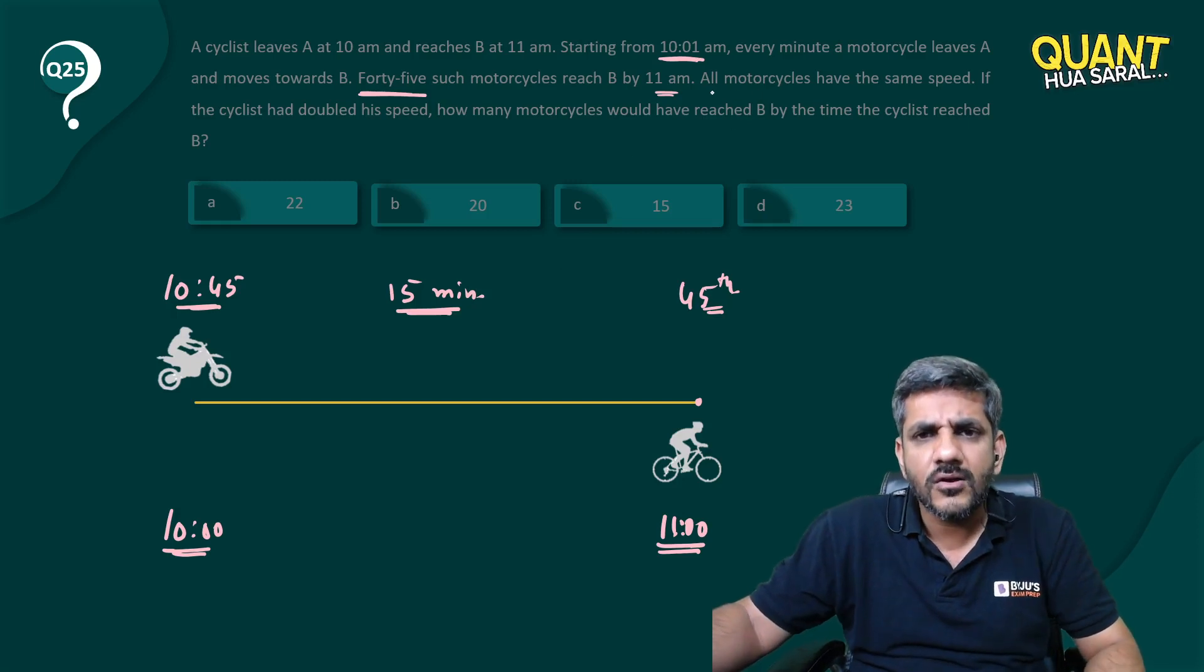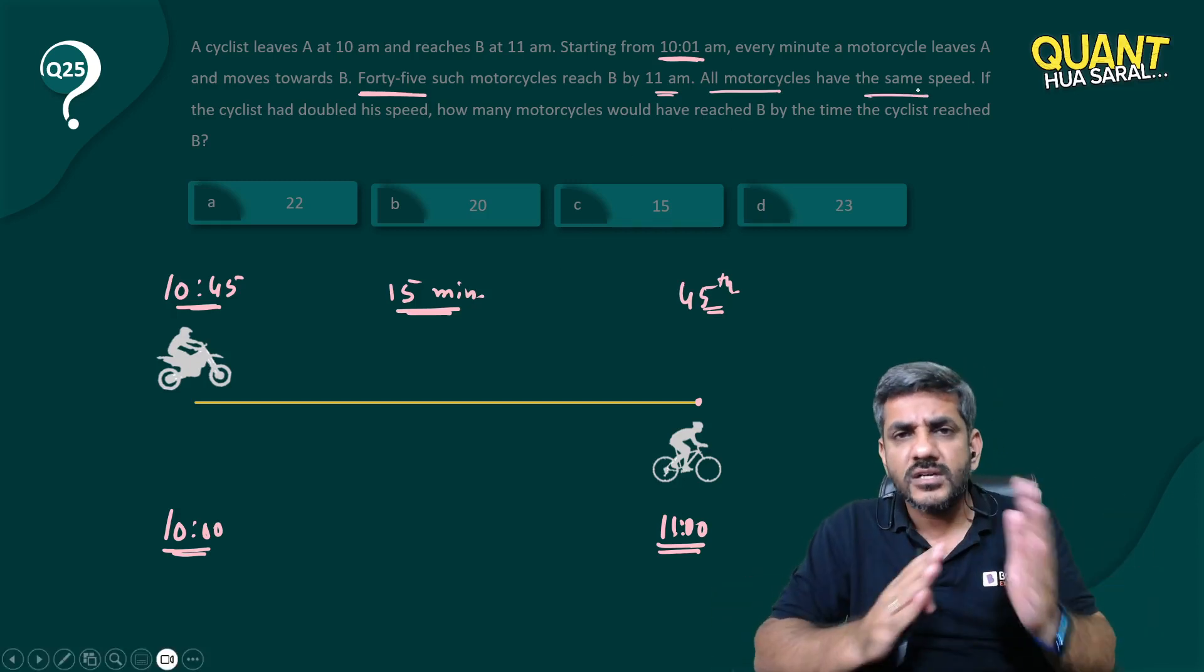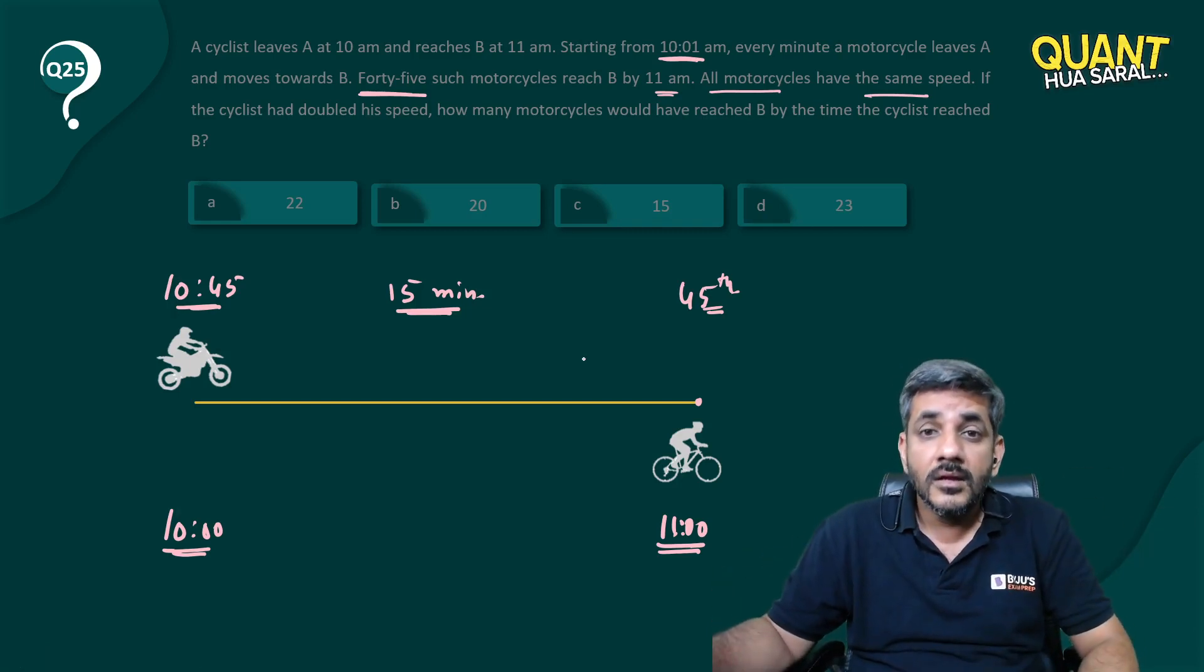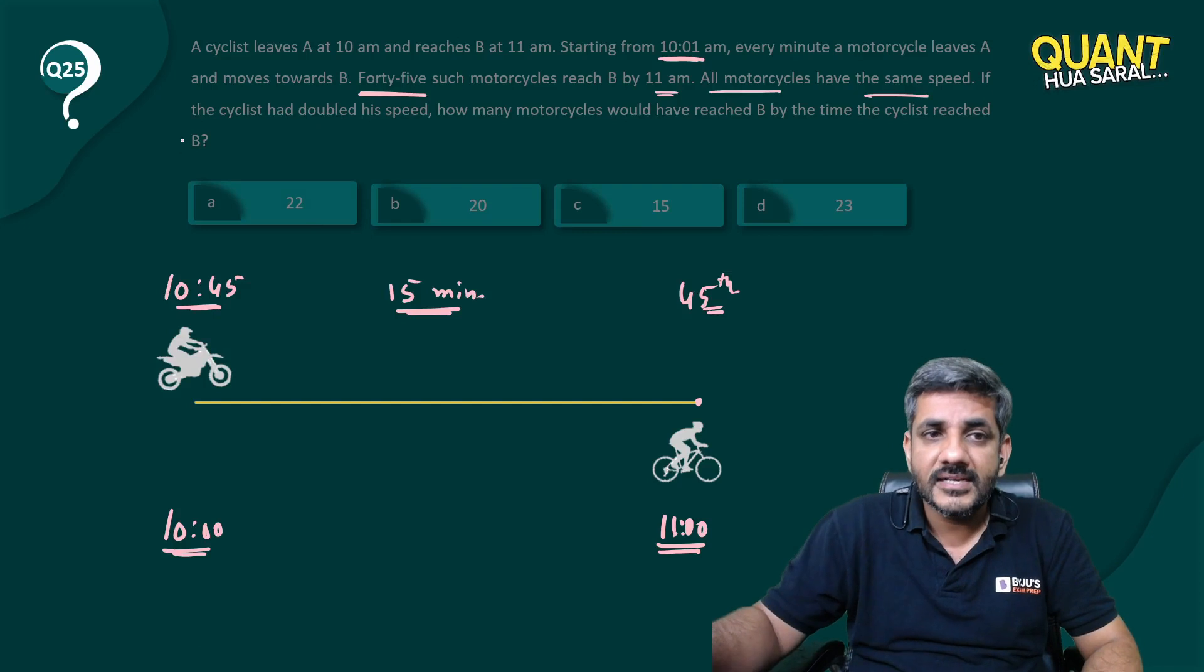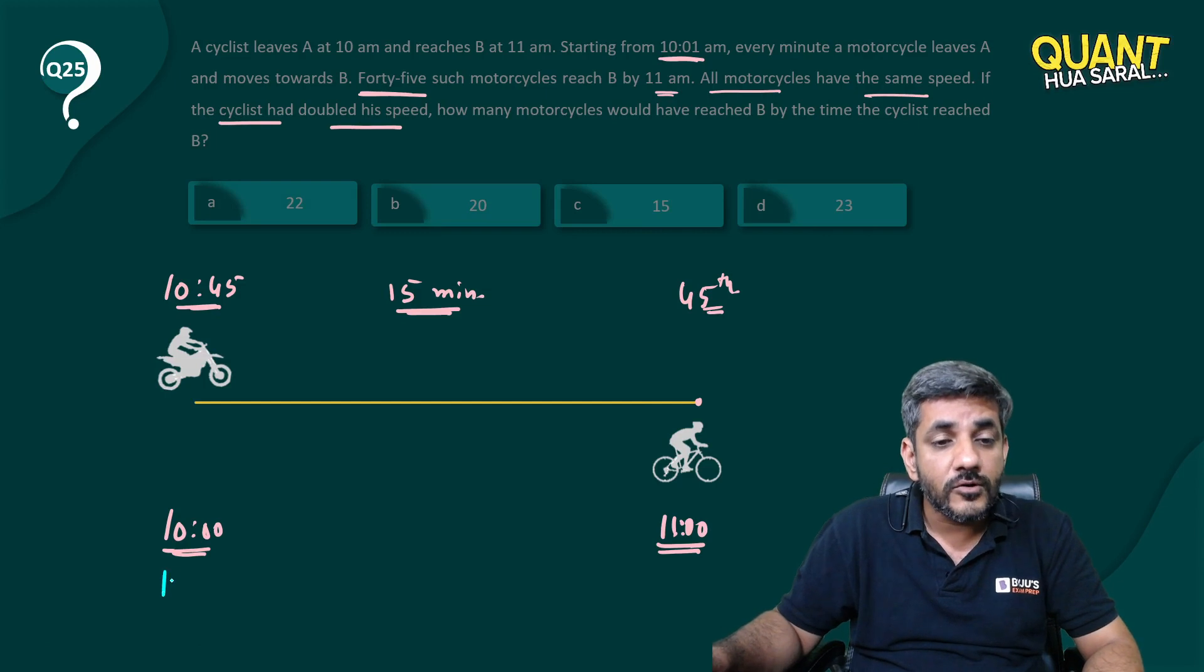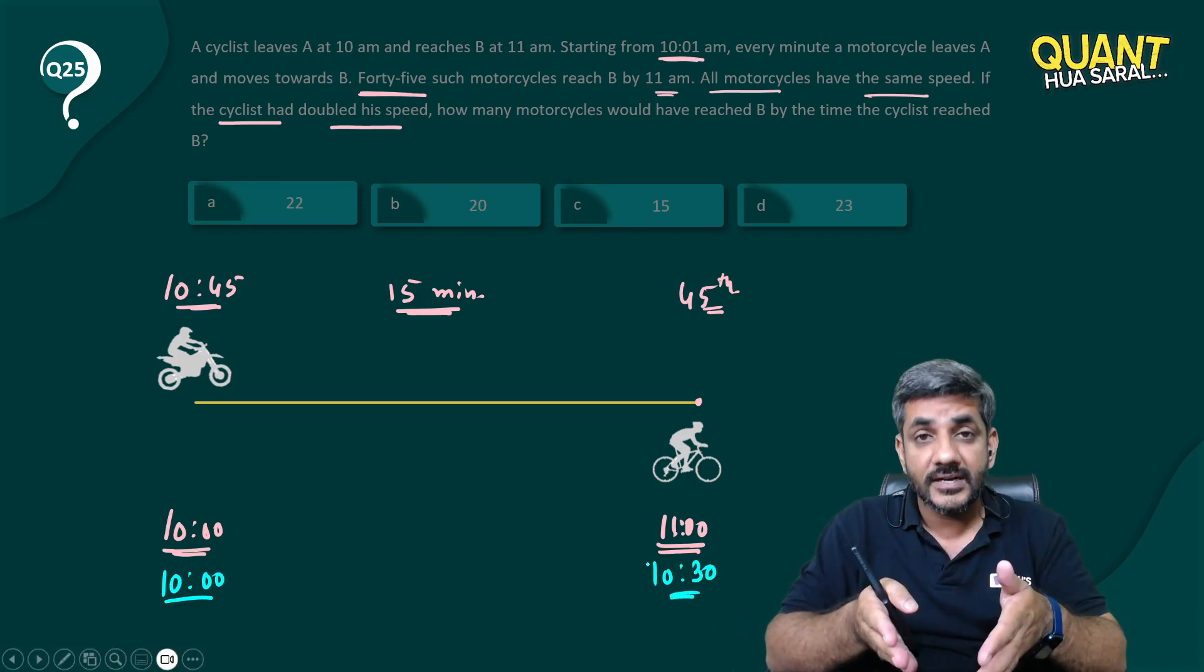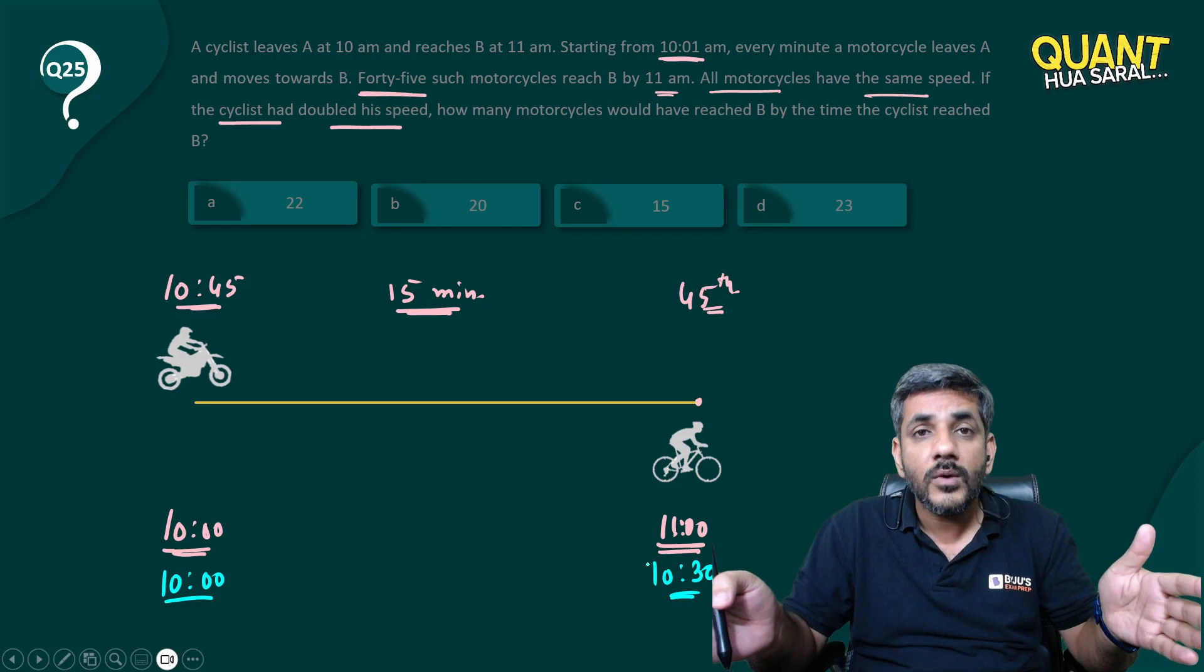And it's clearly written that all motorcycles have the same speed, so every motorcyclist is actually taking exactly 15 minutes. Now see the question a little bit. He says if the cyclist doubled his speed. If the cyclist would double his speed, of course if he starts at 10 o'clock now he is going to reach at this end at 10:30 because he is just going to take half the time. Previously he was taking one hour, now he is going to take half the time.